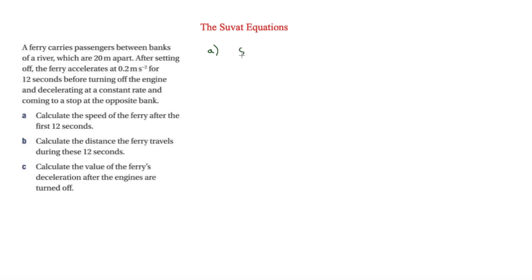To do a SUVAT equation, we put down S, U, V, A, and T and work out which ones we have and which we need. There will normally be one we don't need. For S, the 20 metres is not useful here because it also involves the deceleration phase after 12 seconds — so we put a cross there. The initial velocity U is zero, as it says 'after setting off', implying it starts from rest.